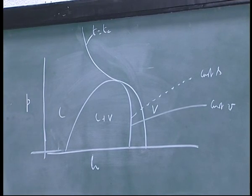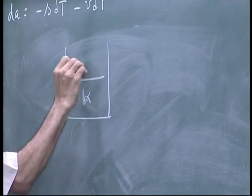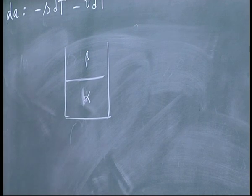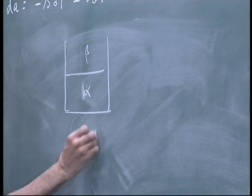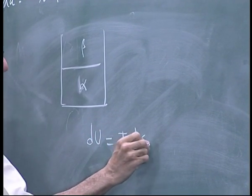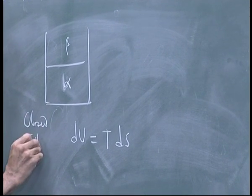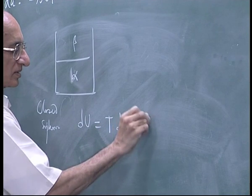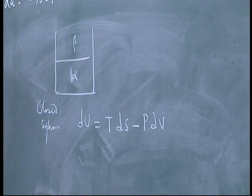So you have essentially all the information you need. If I am looking at work comparisons, suppose I have a pure fluid with an alpha phase and a beta phase. If I write the two laws down for a closed system, I have TdS minus P·dV. These equations are valid for a homogeneous phase.